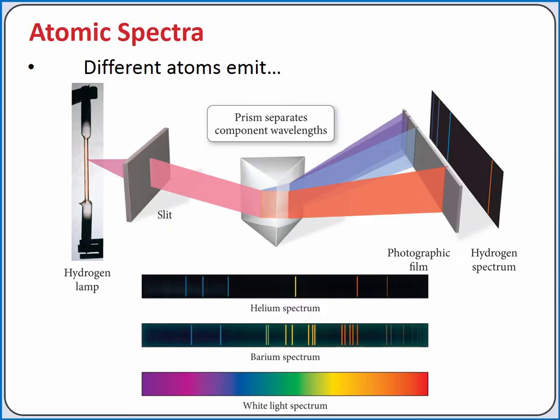Hydrogen spectrum is composed of four distinct wavelengths in the visible spectrum. If you perform this experiment with helium, however, you would get a different spectrum with six distinct wavelengths in the visible spectrum. Each atom has its own unique spectrum.